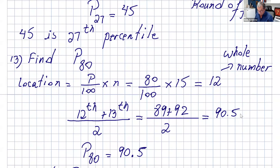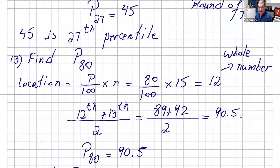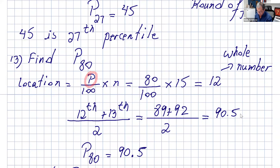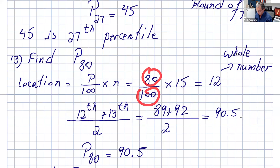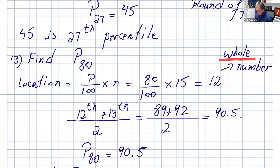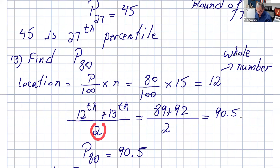Now, if we want to go backwards — we want to know what p80 is, what number is the 80th percentile — to do that, you have to find the location of that number in the data. The formula is p divided by 100 times n, which is the sample size. So we want p80: you take 80 divided by 100, multiply that by 15, and you get exactly 12. You have to be careful with this detail, because when you get a whole number, you don't just take the 12th number in the data. You take the 12th number plus the 13th number, and divide that by 2.